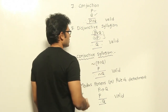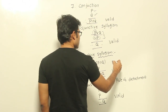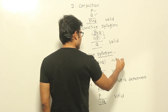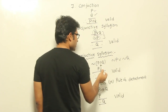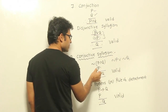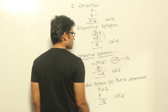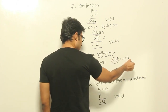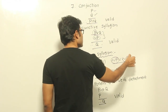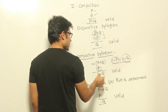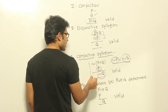Conjunctive syllogism: if ¬(P∧Q) is true, it can be written as ¬P∨¬Q. P is already given, so P is true. If P is true, then ¬P is false. But if ¬P∨¬Q still has to be true, it is possible only when ¬Q is true. Therefore writing ¬Q is valid — this is a valid argument.